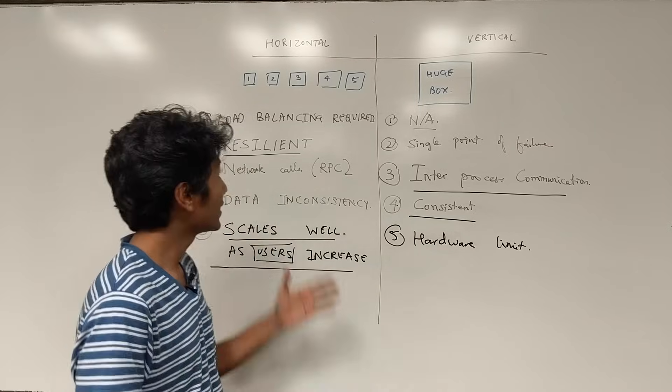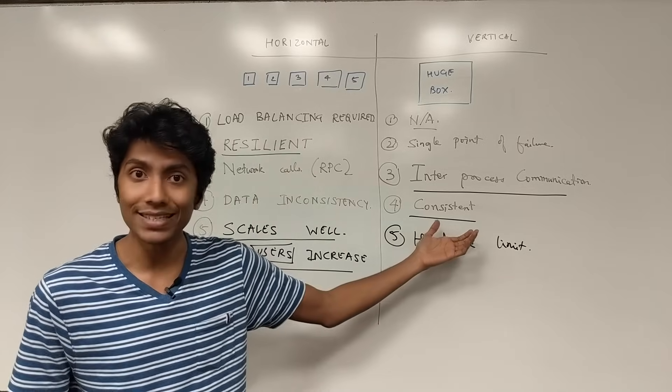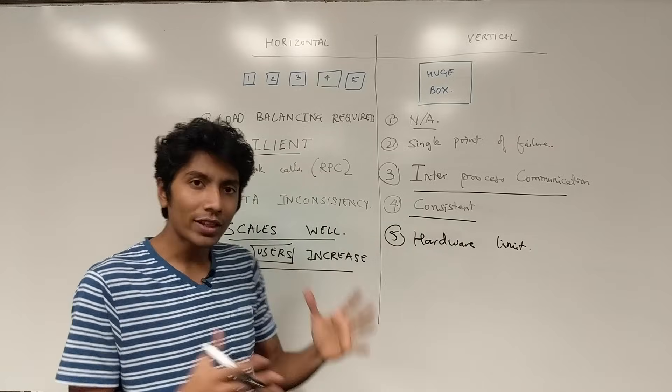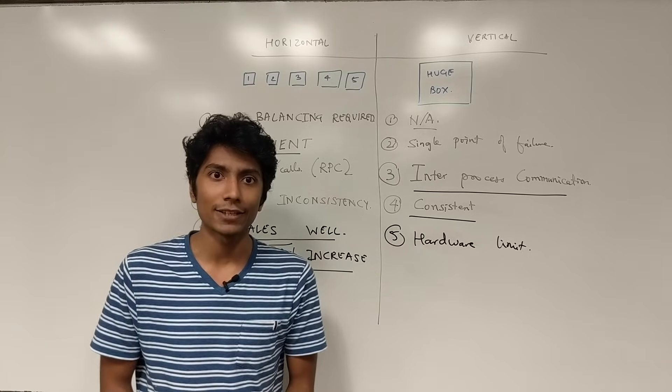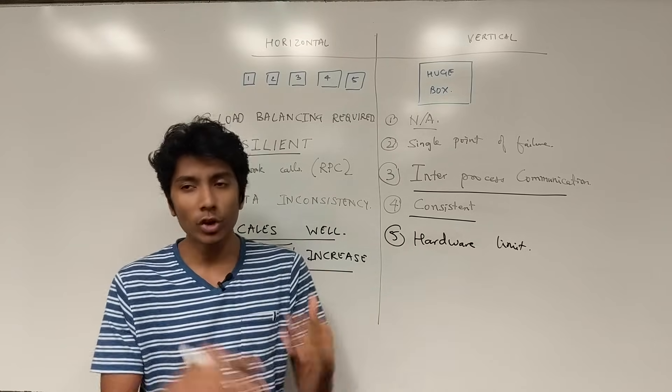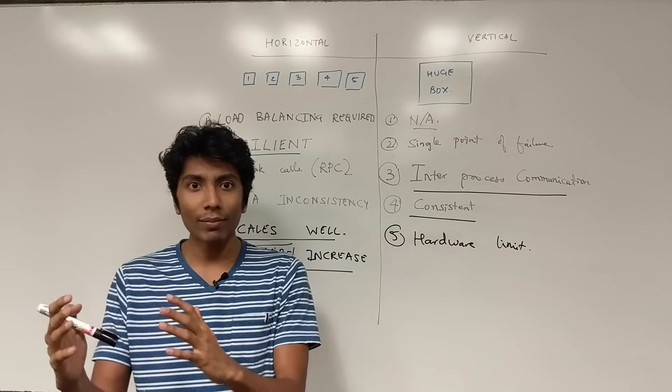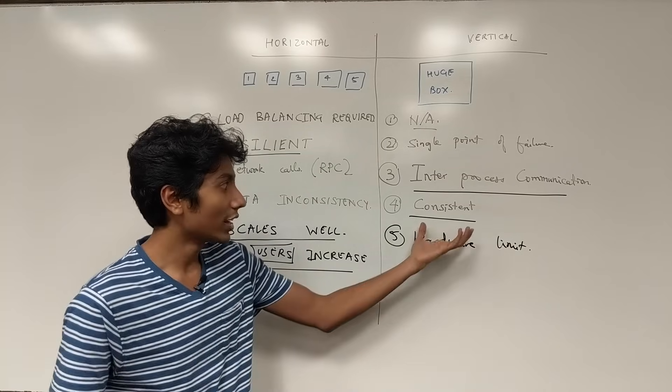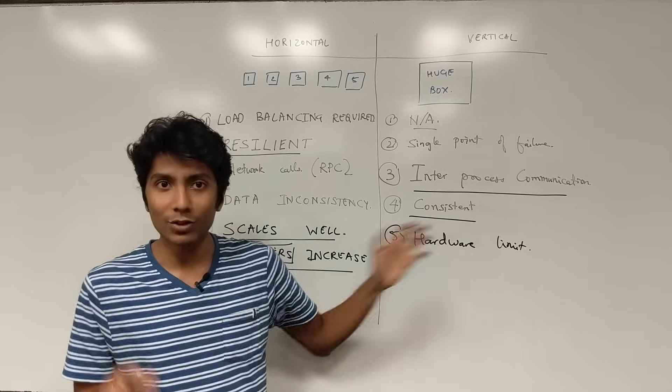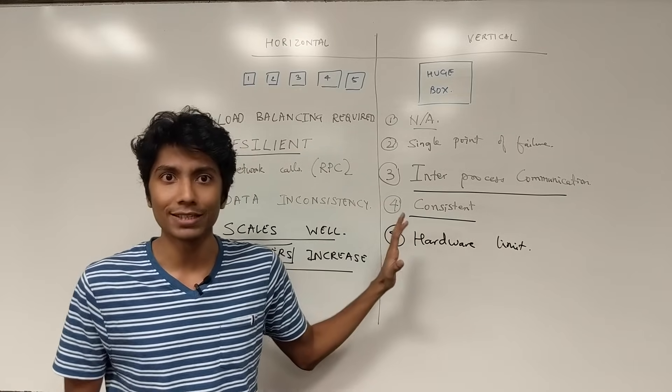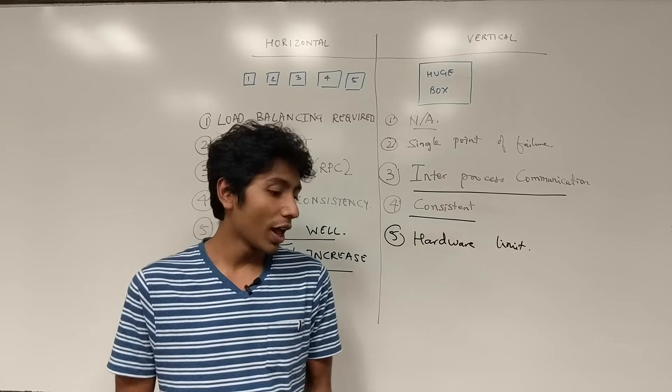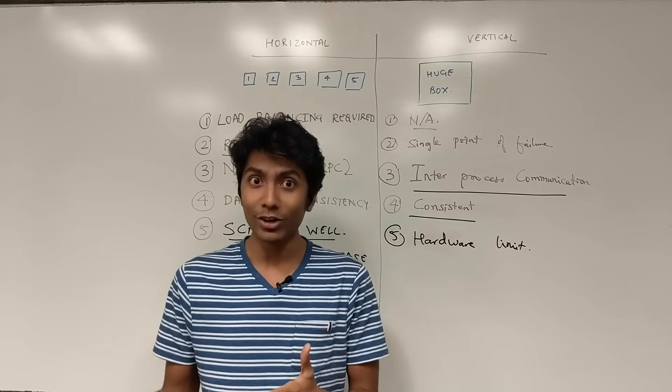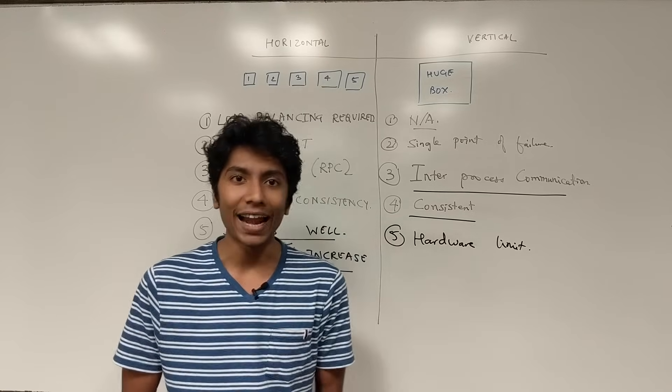So these are the major considerations we have when designing a system. Is it scalable? Is it resilient? And is it consistent? With these qualities, there's always going to be some trade-offs that we have, and that's what system design is. We design a system which is going to meet the requirements, and the requirements are such that it's going to be computer science-wise possible to actually build a system like this. If you have any doubts or suggestions, you can leave them in the comments below. If you want notifications for further videos, hit the subscribe button and I'll see you next time.